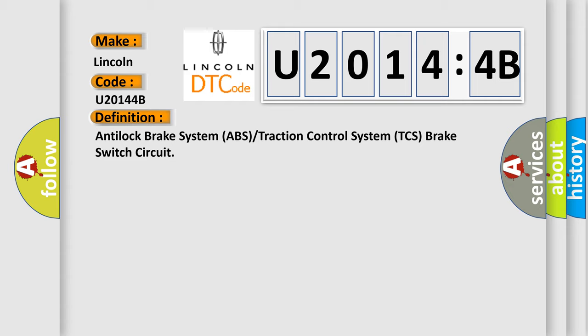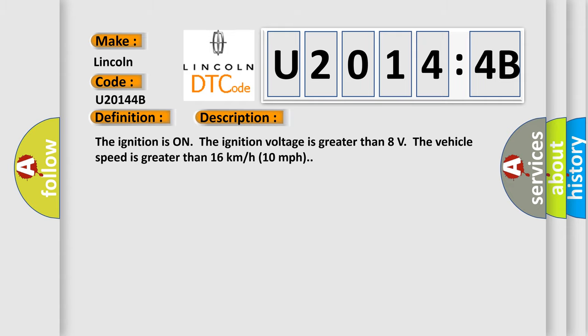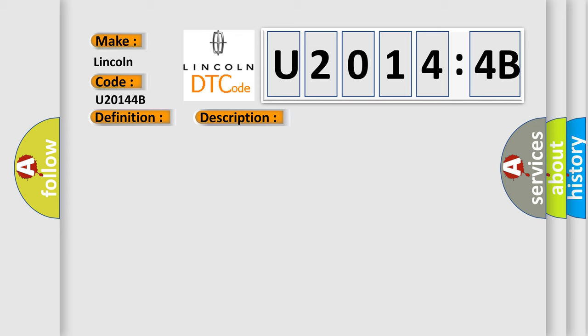And now this is a short description of this DTC code. The ignition is on, the ignition voltage is greater than eight volts. The vehicle speed is greater than 16 kilometers per hour, 10 miles per hour. This diagnostic error occurs most often in these cases.